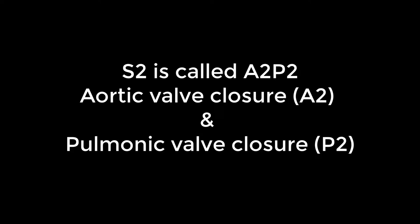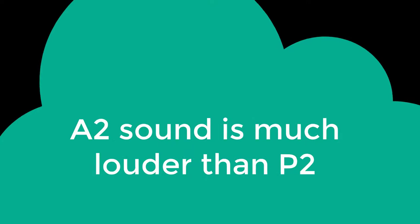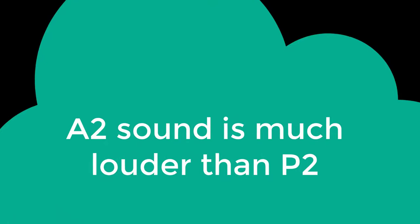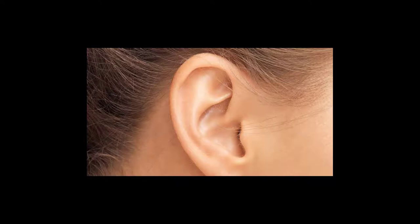The A2 sound is normally much louder than P2 because of higher pressures in the left side of the heart. Thus, A2 radiates to all cardiac listening areas and is loudest at the right upper sternal border, while P2 is usually only heard at the left upper sternal border. When listening to the second heart sound, A2 is the main component that you hear. Although S1 and S2 are considered discrete sounds, each is created by the near-instantaneous closing of two separate valves. Let us now listen to a normal S1 and S2.